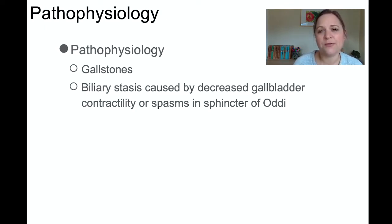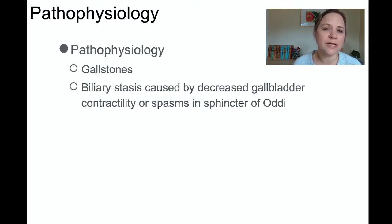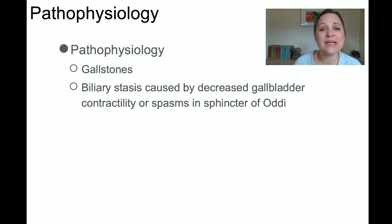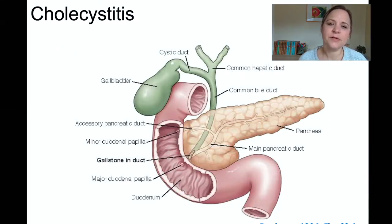What happens with gallstones is that there is an imbalance within the gallbladder itself, specifically usually too high of cholesterol. The cholesterol forms into these stones, and these stones can cause obstruction and inflammation. It causes the bile to be stagnant, unable to flow freely, and can cause a lot of pain and even spasms.